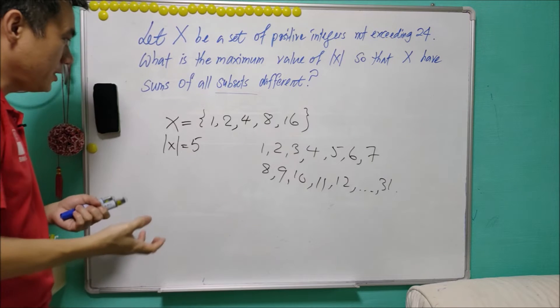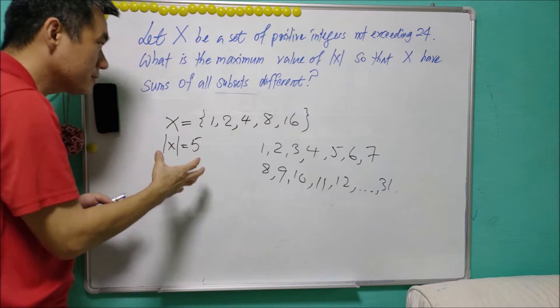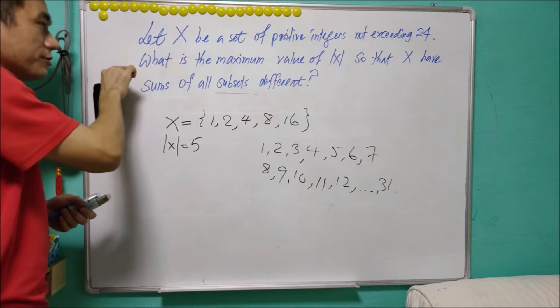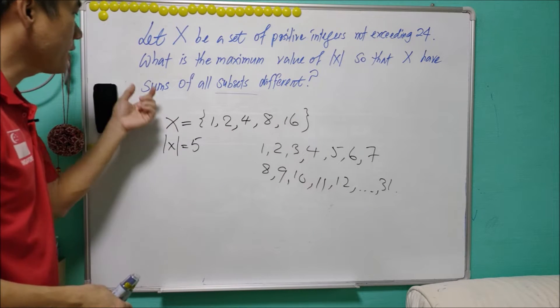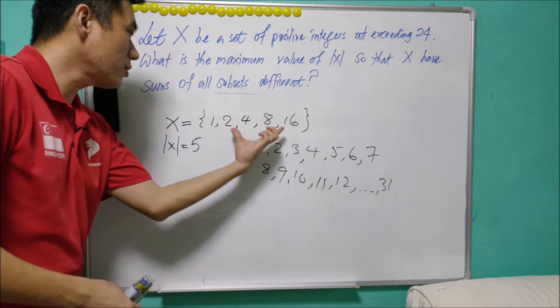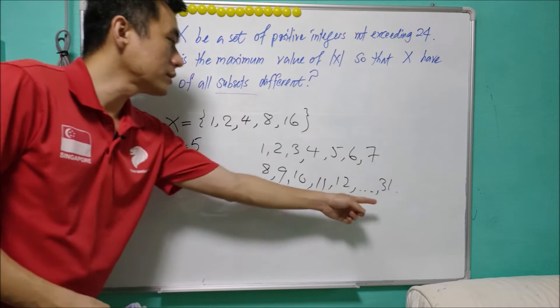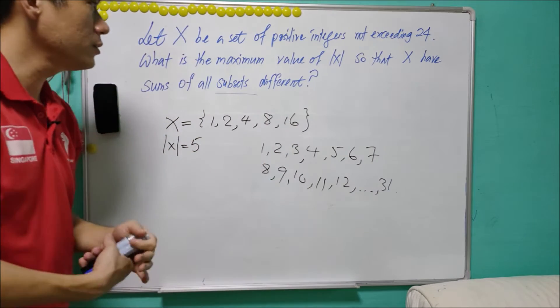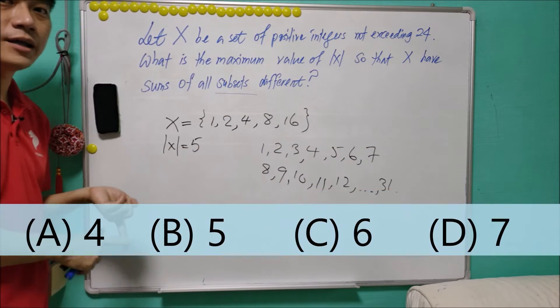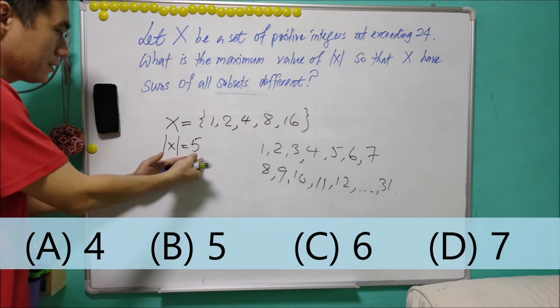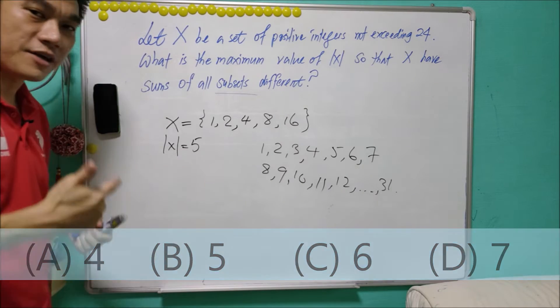For this set X, it has 5 elements and satisfies this condition. So the natural question is, are we able to increase the number of elements from 5 to 6 such that it still fulfills the condition? Obviously, if there is an X of 6 elements that satisfies the condition, it cannot contain these 5 elements because the subset sums range from 1 to 31. We are unable to put anything between 1 to 24 inside here. A is not the possible answer because we can have a better one. And now, I'm going to use Pigeonhole principle to show that it cannot have 7 elements.